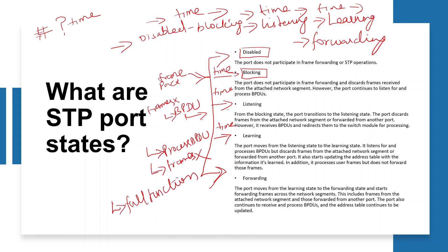Once you have learning, you will reach full function. In full function, the frames will be processed by BPDU. In forwarding state, first disable and block, then listen to BPDU.